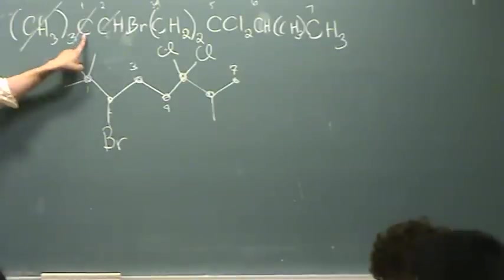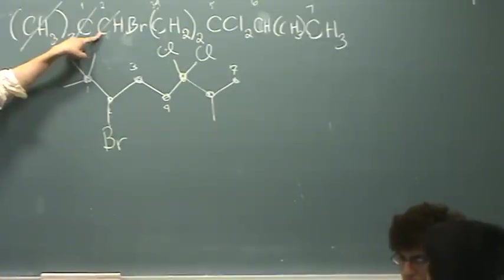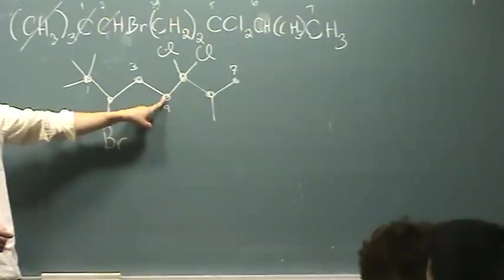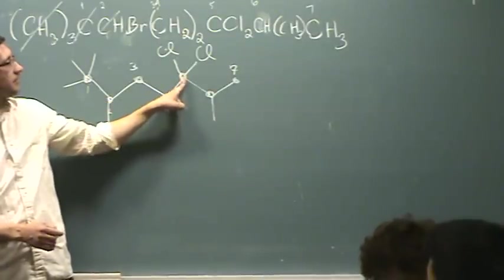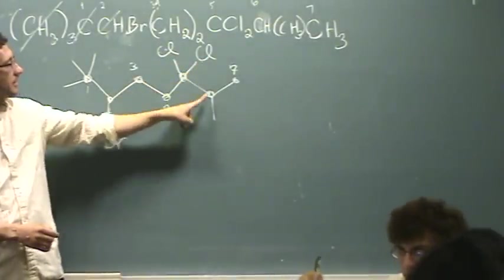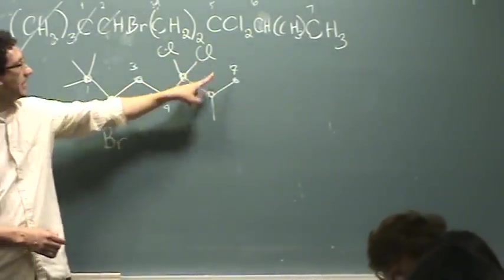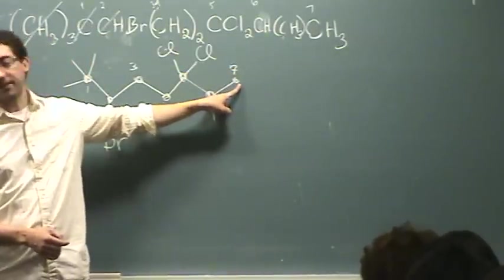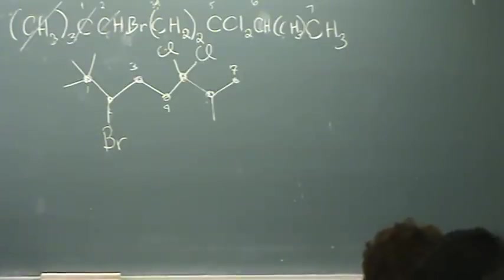So, I've got this carbon with three methyls. I've got the next carbon with a Br and an H. I've got two CH2CH2. I've got a carbon with two Cls. Then I've got a carbon with an H and a CH3. And then after that is another CH3.